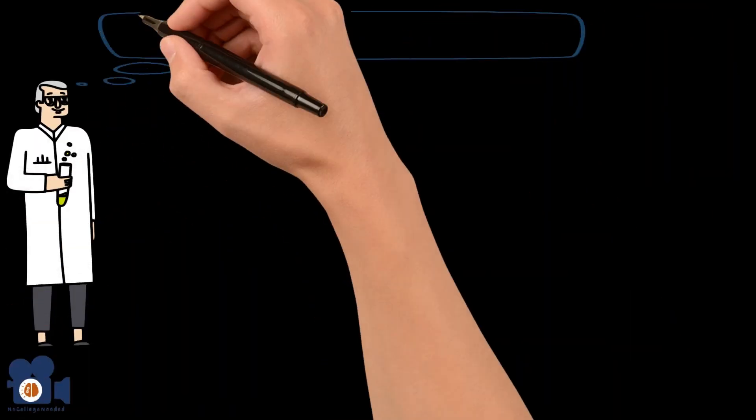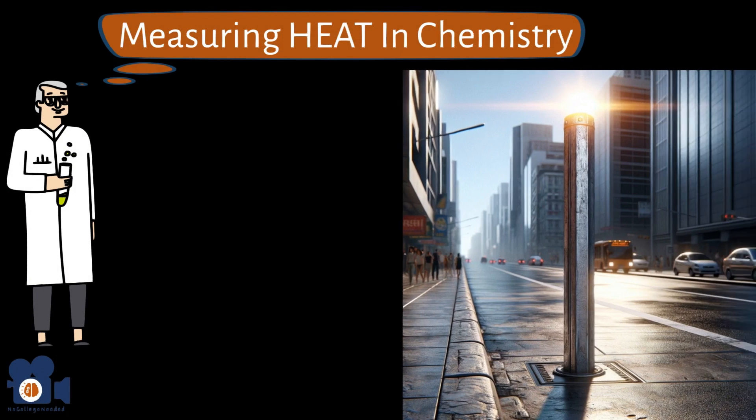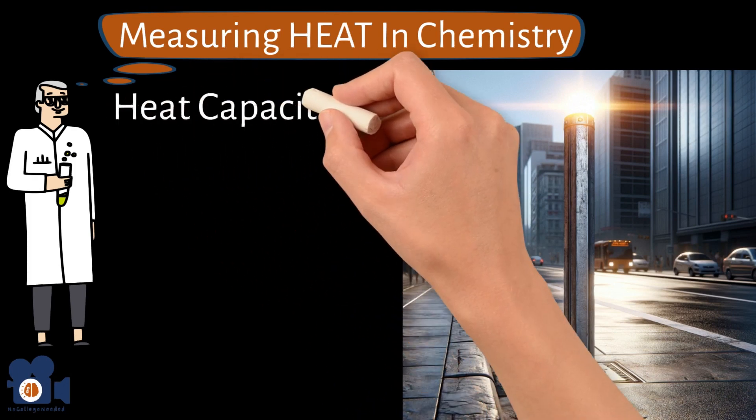Welcome, ladies and gentlemen. Today we're going over how scientists measure heat in chemistry. Have you ever touched metal that has been baking in the sun? It's so much hotter than anything else, right? This is for various reasons, but one of them is due to a property which we call heat capacity C.